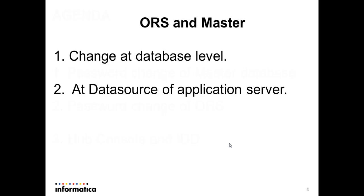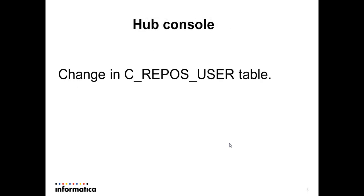To change the password for ORS and master database there are two steps: first we need to change the password at the database level, and then we need to change it in the data source of the application server. To change the hub console admin password, we need to change it in the C_REPOS_USER table present under CMX system.